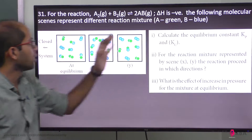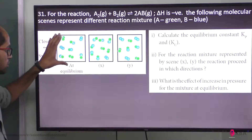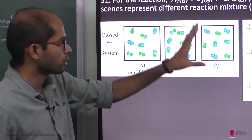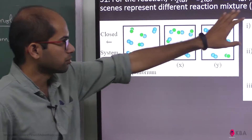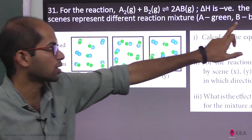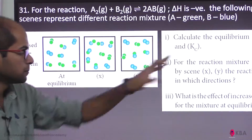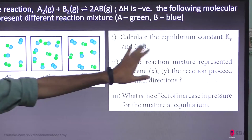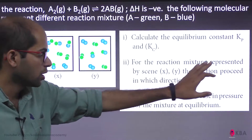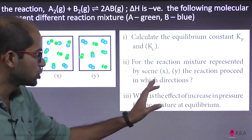The following molecular scenes represent different reaction mixtures. Green represents A, blue represents B. Calculate the equilibrium constant Kp and Kc. For the reaction mixture represented by scene X and Y, in which direction does the reaction proceed?